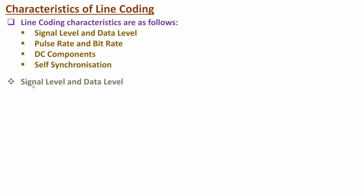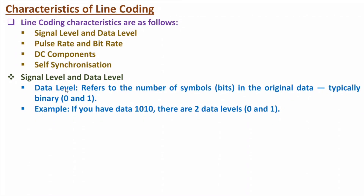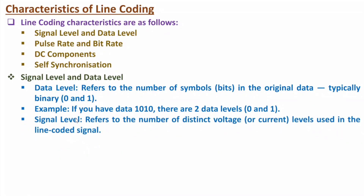First, signal level and data level. Data level refers to the number of symbols in the original data. Typically for binary signals we have logic 0 and logic 1. If you have binary data like 1010, we have two data levels: logic 0 and logic 1. Signal level, on the other hand, refers to the number of distinct voltage levels in the line coded signal.